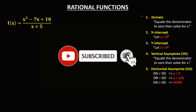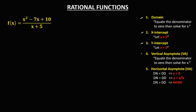Let's solve this problem. We need to find the domain, the x-intercept, the y-intercept, the vertical asymptote, and the horizontal asymptote of rational functions from this given.